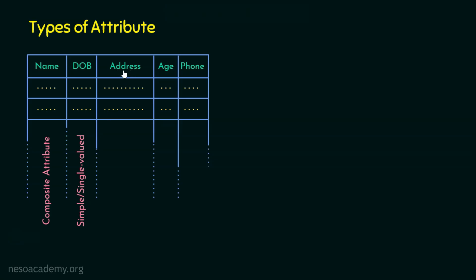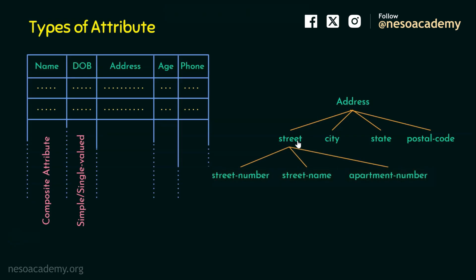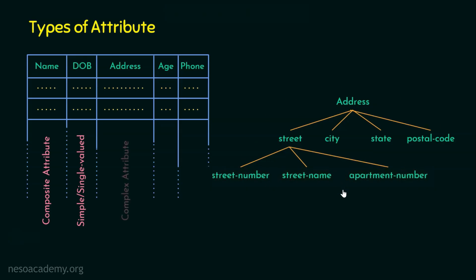Coming to the next type of attribute — address. It's an important attribute that needs to be properly addressed in DBMS. Address can be referred to as a composite attribute because it may contain information related to street, city, state, and postal code. Furthermore, the street itself can contain multiple pieces of information: the street number, street name, and apartment number. So this is a composite attribute containing another composite attribute inside it.